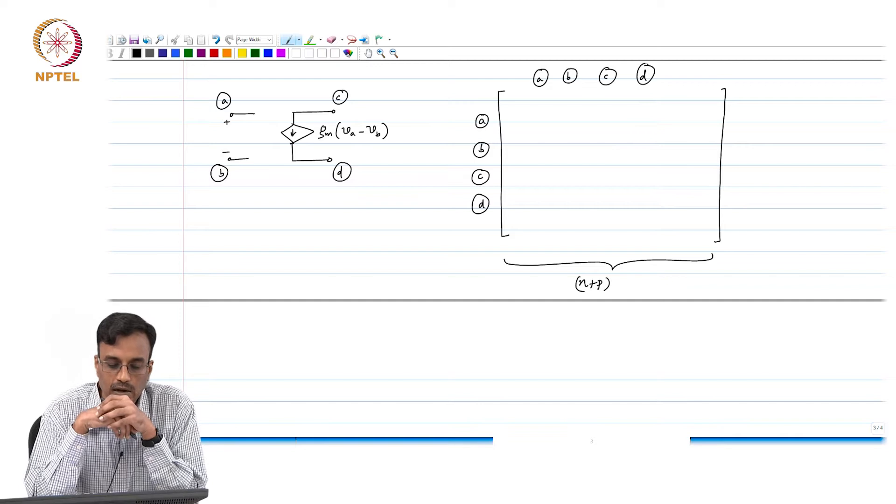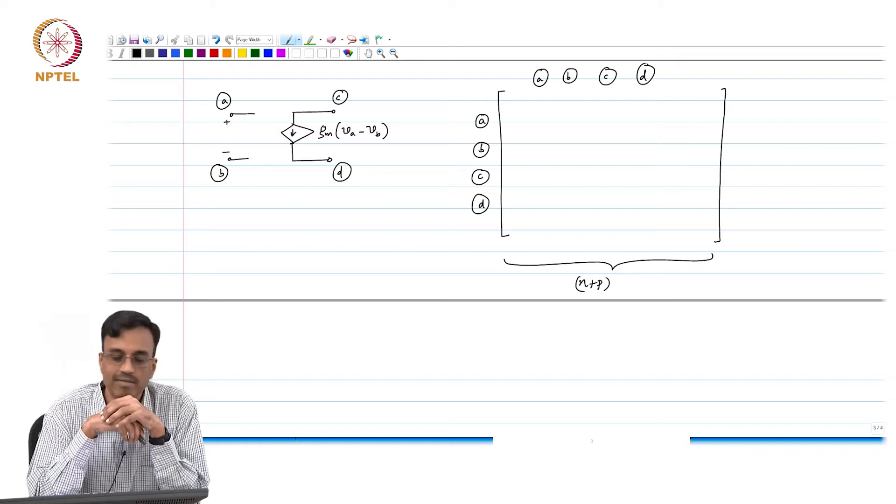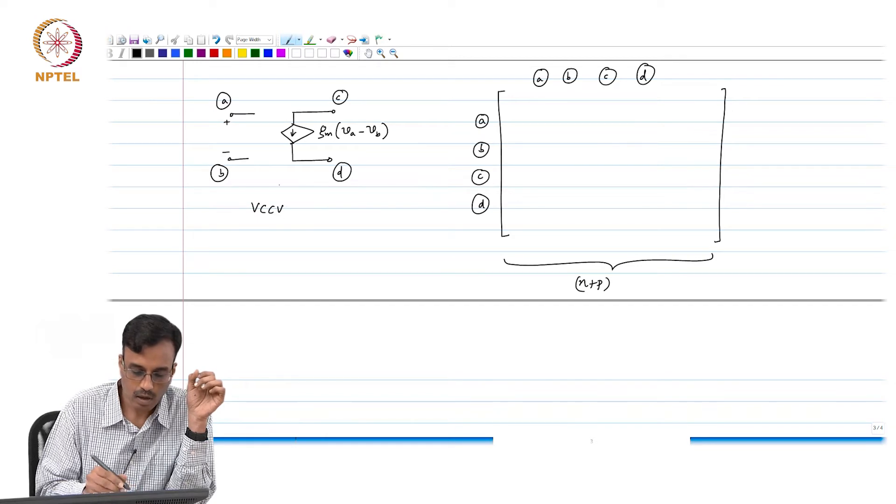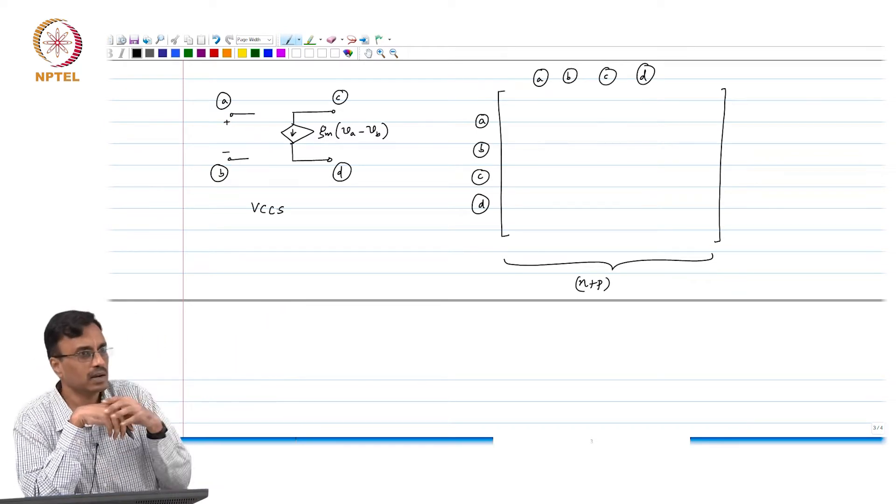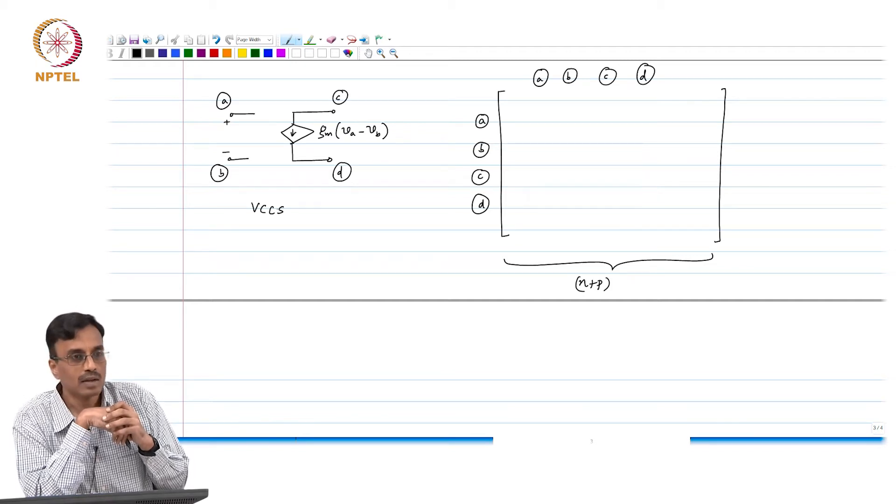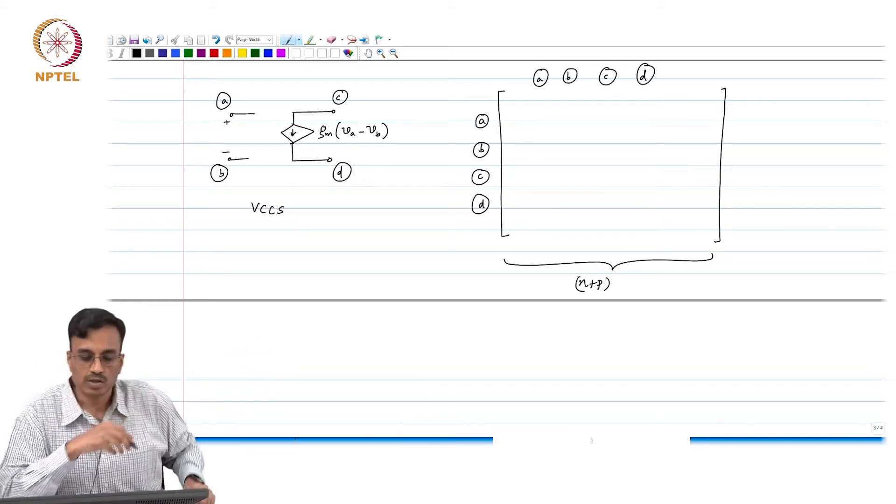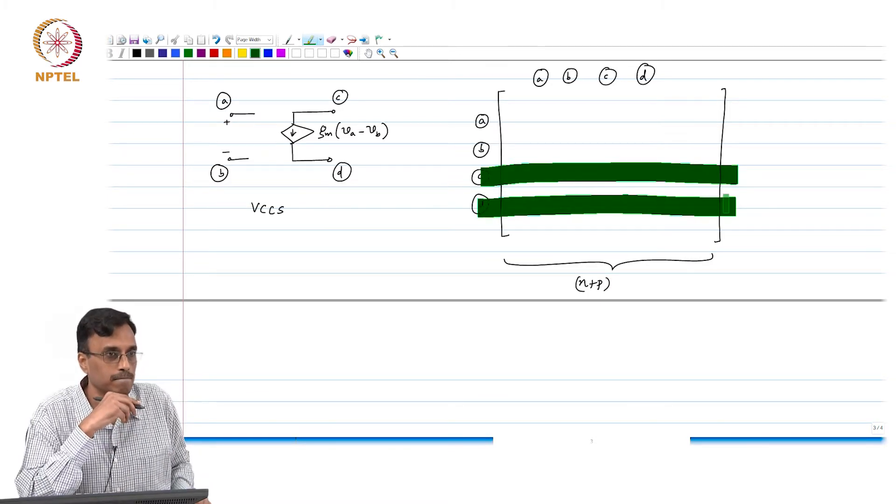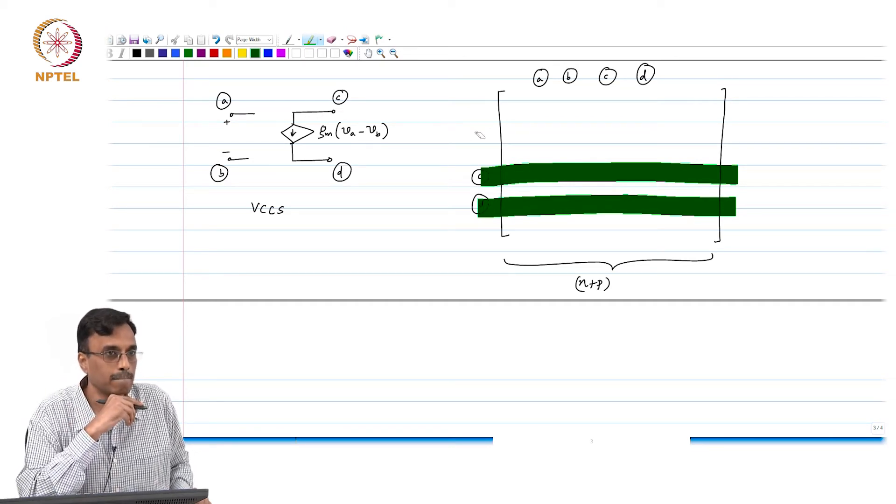Can you tell me what will happen, in which row we will have the stamp of the voltage control current source? Well, the current is flowing between C and D. So all the action will be in the rows which correspond to the Cth and Dth nodes. All the action will be here in this row. We do not have to worry about these two guys.